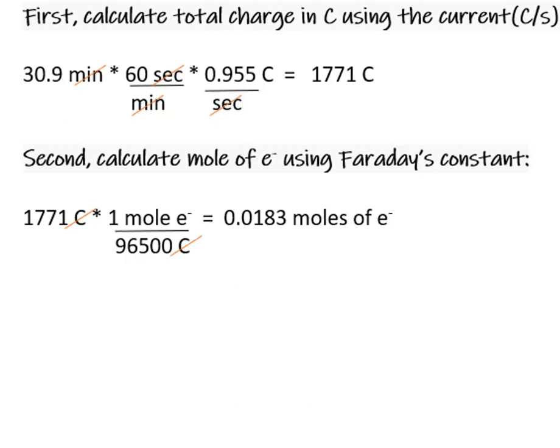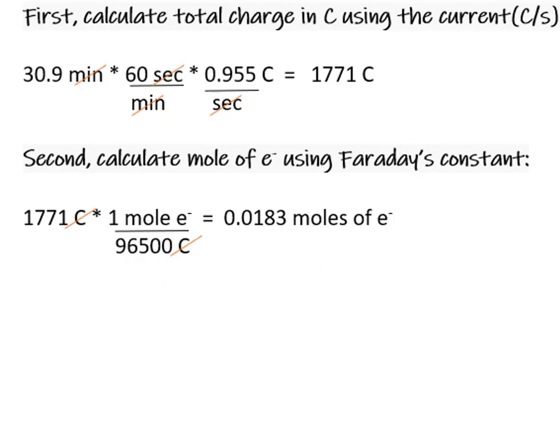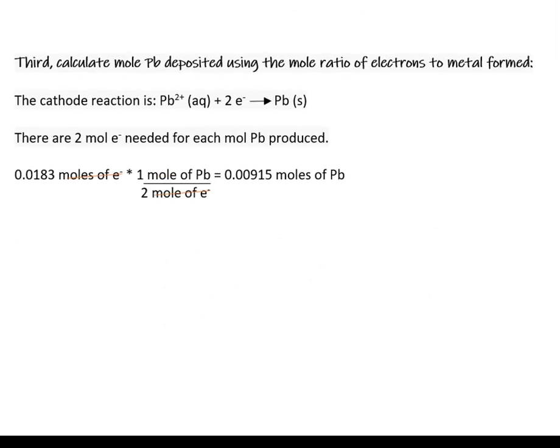The 0.0183 moles is of electrons, not of lead. That's a really important distinction to make when you're doing these kinds of problems. The third step is to calculate the moles deposited using the mole ratio of electrons to the metal formed.